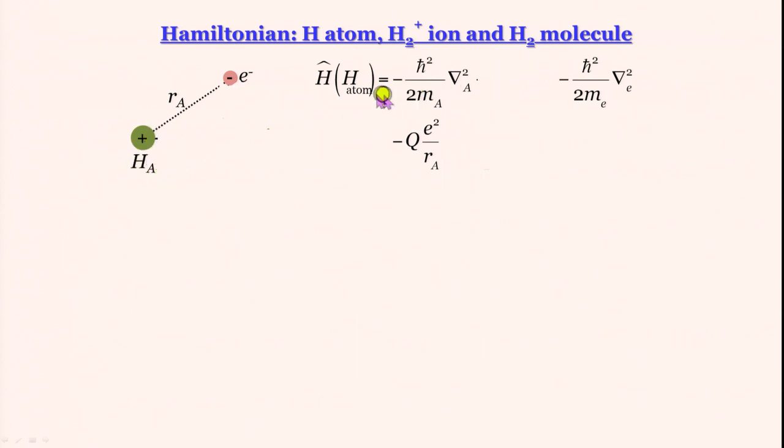What will be the terms in Hamiltonian here? Kinetic energy term for the nucleus A: minus h-bar squared by 2Ma del-A squared. Minus h-bar squared by 2Me del-E squared gives us the kinetic energy term for the electron. The third one, minus Q squared by Ra, is the potential energy term for attraction of electron by the nucleus.